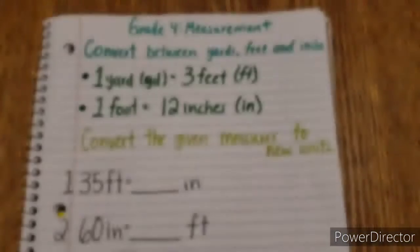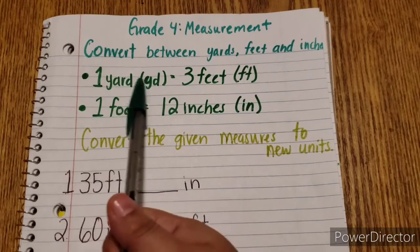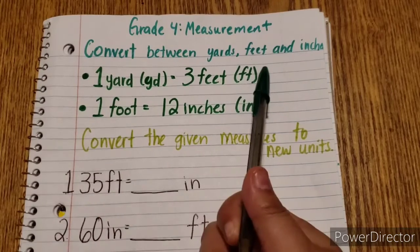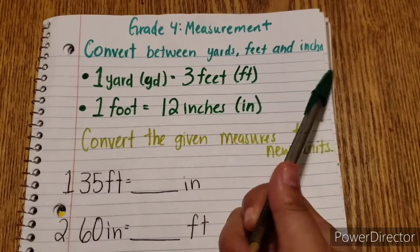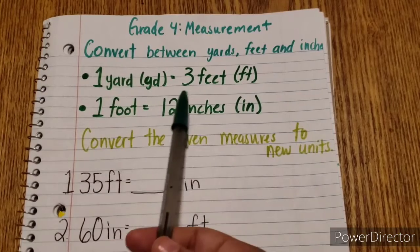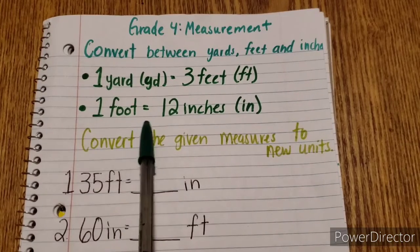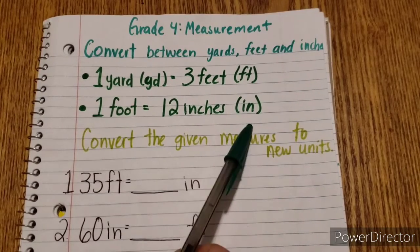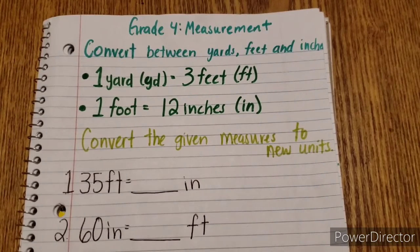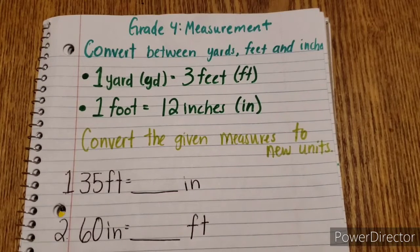Now we're going to get into grade 4 measurement. We need to convert between yards, feet, and inches. Here we have 1 yard equals 3 feet, and 1 foot equals 12 inches. We need to convert the given measures to new units.